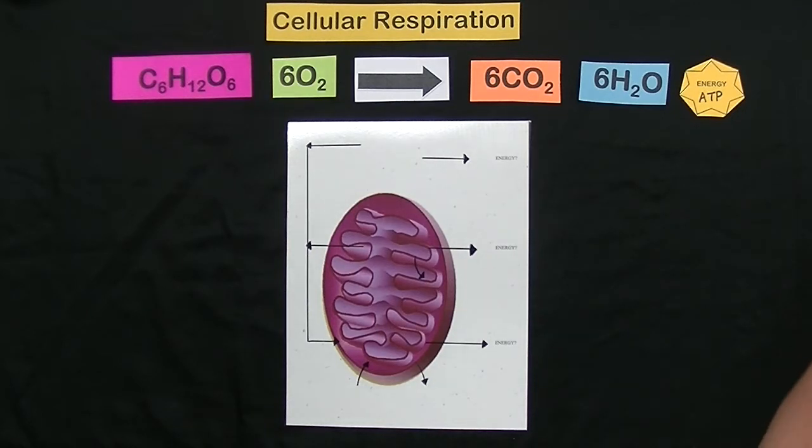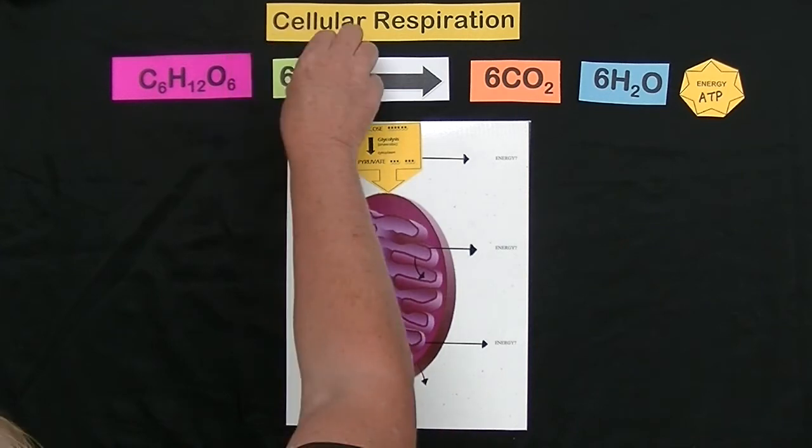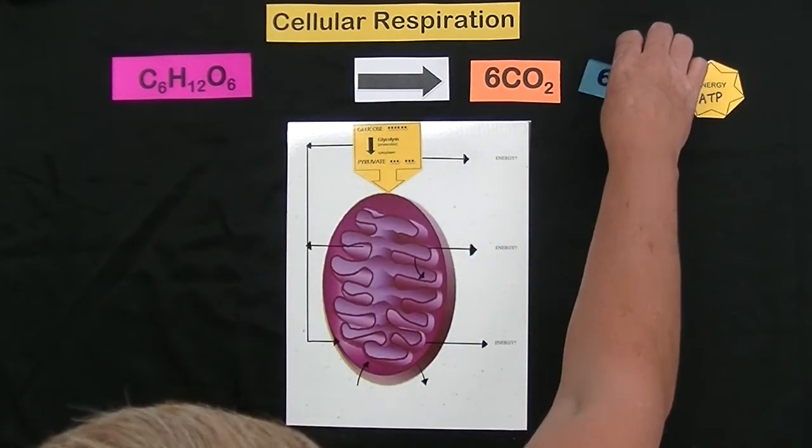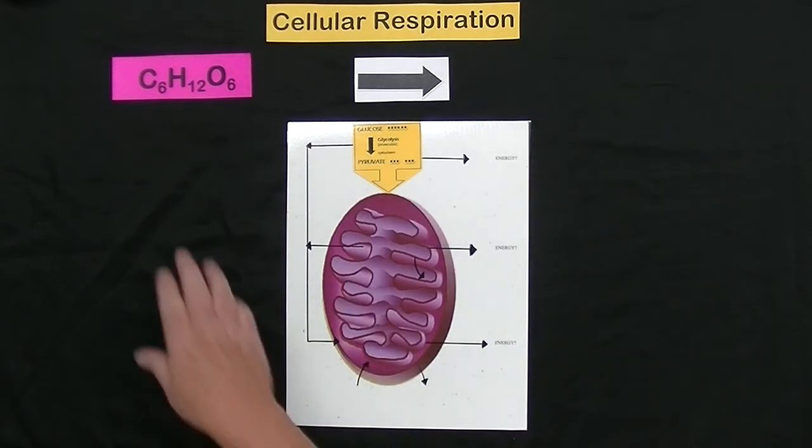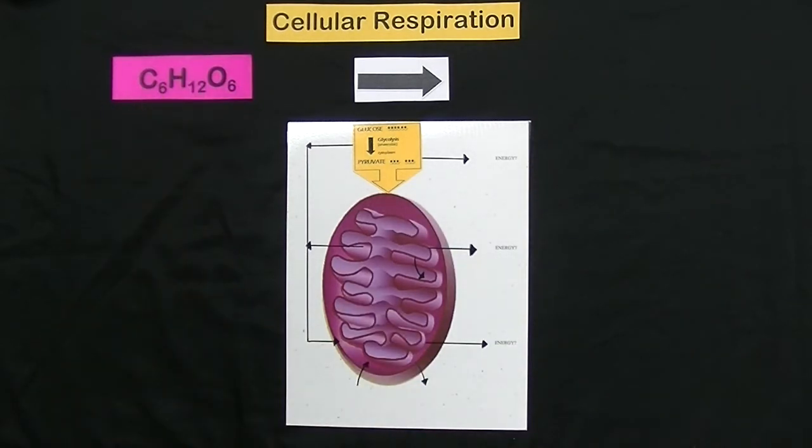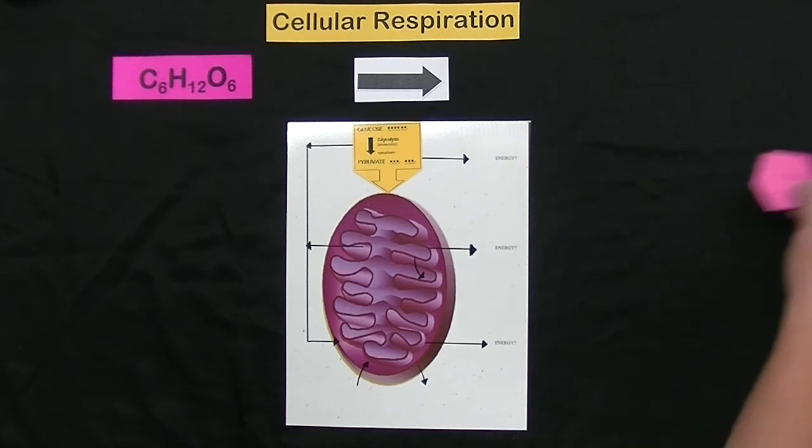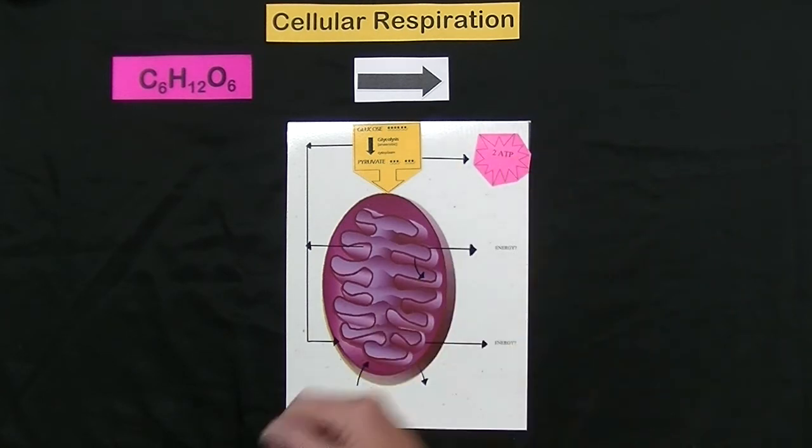The first step is where the glucose is converted into pyruvate and this occurs in the cytoplasm. This is an anaerobic process which means oxygen is not used. It is not necessary for this to occur. Glycolysis will produce two molecules of ATP for every molecule of glucose that's broken down.